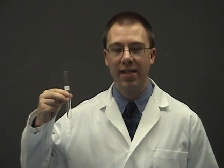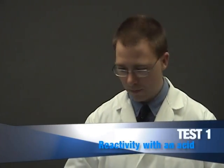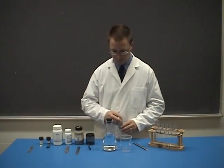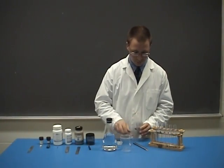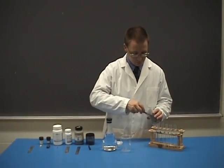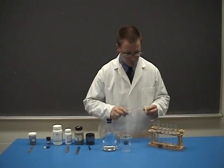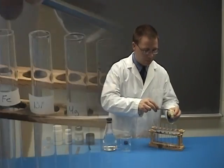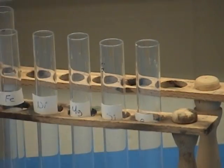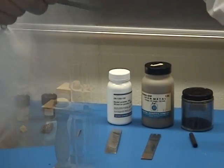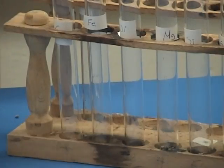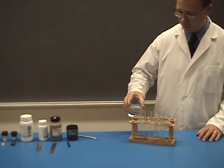We've already labelled our test tubes, and now we're going to fill them with the substances. Place a small quantity of each substance in a different test tube, then fill two-thirds of each test tube with hydrochloric acid.